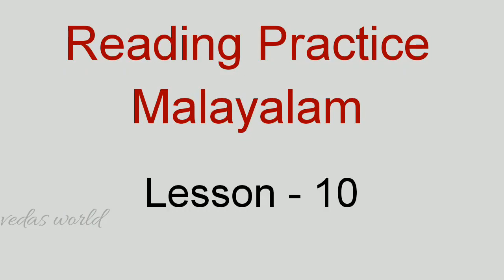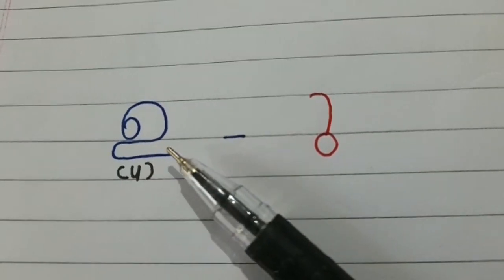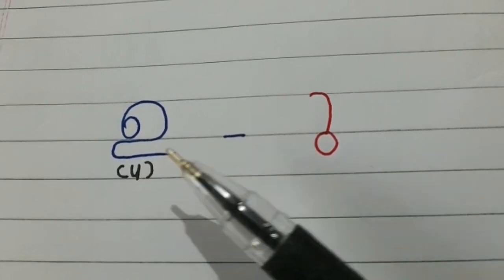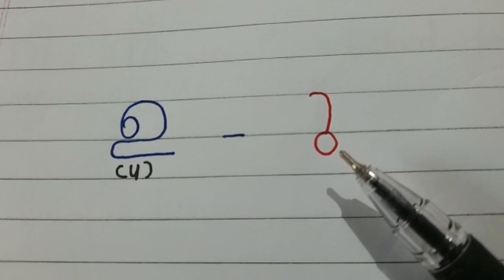Hi everyone, welcome back. This is the 10th lesson of our reading practice session for Malayalam. This is the vowel letter 'o' and this is the sign for 'o'.